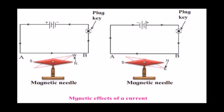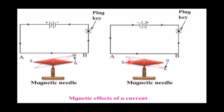To understand the magnetic effect of electric current, we do an experiment. We take a copper wire and attach it in a circuit, along with a plug key and a magnetic compass needle placed adjacent to the circuit. When we open the plug key — not allowing the current to pass — the magnetic needle doesn't move. But as soon as we close the plug key and start the current, the magnetic needle moves in the other direction, as you can see in the second picture.